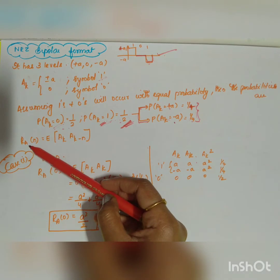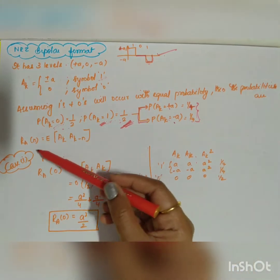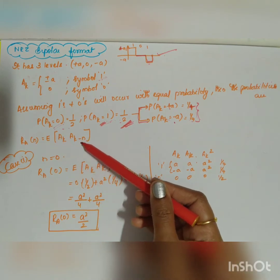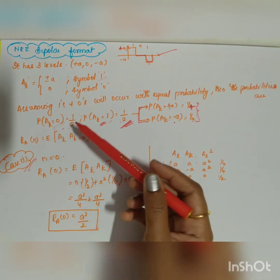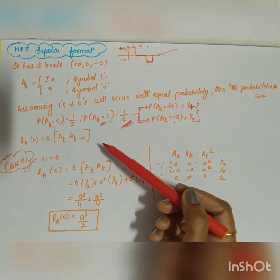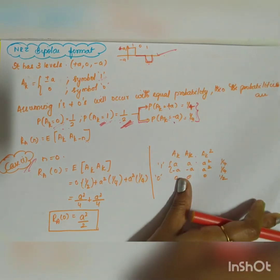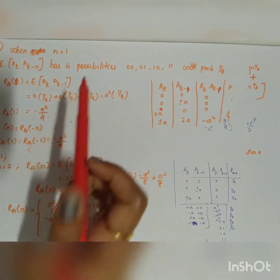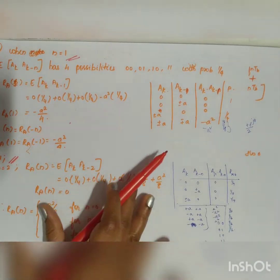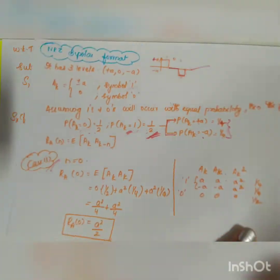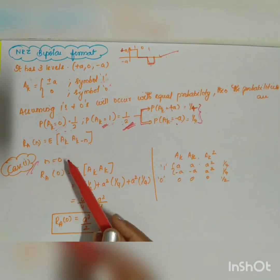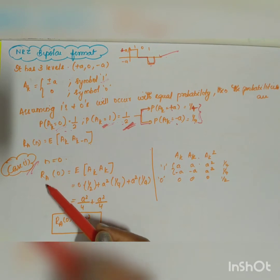Now we compute the autocorrelation function R_a(n) = E[a_k · a_{k-n}]. Unlike the previous two cases which had two conditions, here we define three conditions: when n equals zero, when n equals one, and when n is greater than one.